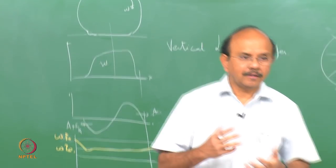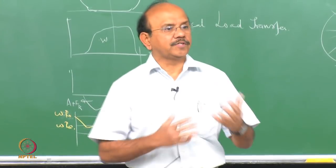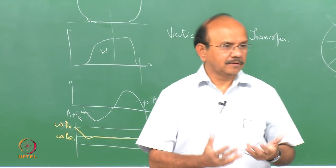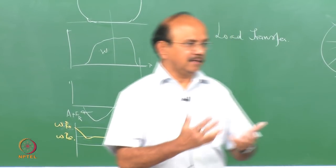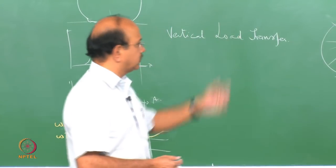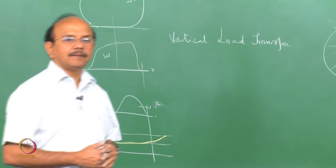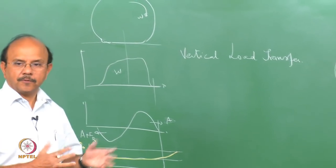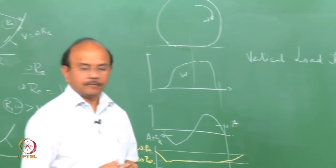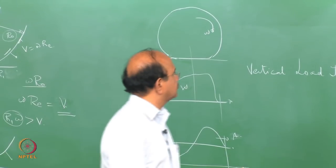The whole load goes through the side wall onto the bead — the most important component — which transmits it to the rim, and that gives the rim the force to support the load. As the tyre rolls, different parts come under tension and hold the wheel, so there is a compression-tension cycle which is also responsible for hysteresis.